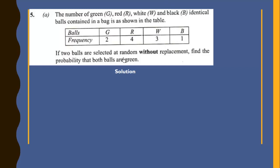So if 2 balls are selected at random without replacement, find the probability that both balls are green.